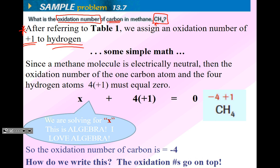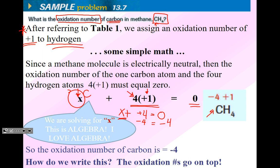What is the oxidation number of carbon in methane? Since a methane molecule is electrically neutral, the oxidation number of the one carbon atom and the four hydrogen atoms must equal zero. I've added X as a variable for carbon because that's what we're looking for. For hydrogen, we know each has an oxidation number of plus one and there are four of them. So: X + 4(+1) = 0, because methane is not a polyatomic ion — it's an entity. Solving for X: X + 4 = 0, so X = -4.